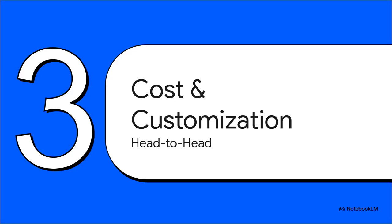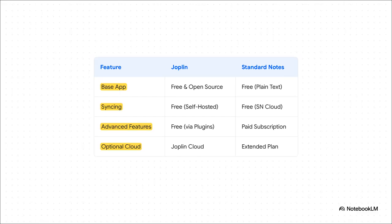This brings us to the head-to-head comparison. When we look at cost and customization, their completely different philosophies become crystal clear — just look at this table. Joplin's main app, advanced features through plugins, even hosting your own sync — it's all free. The entire model is built on openness. Now look at Standard Notes: the secure base app and sync are free, but pretty much any advanced feature, from rich text to themes, is bundled into their paid plan. You're not just buying features — you're paying for a curated, professionally maintained, and super secure ecosystem.